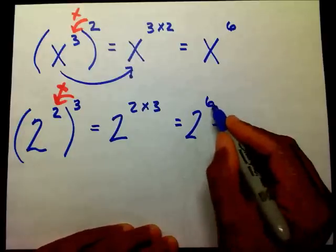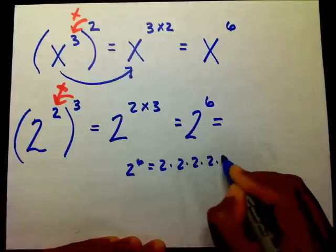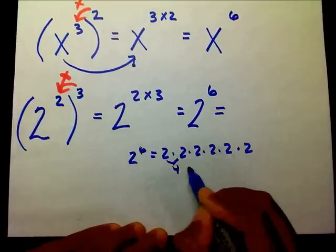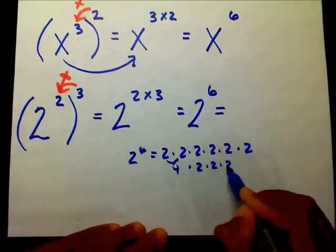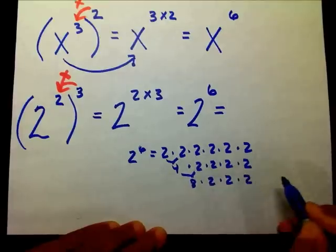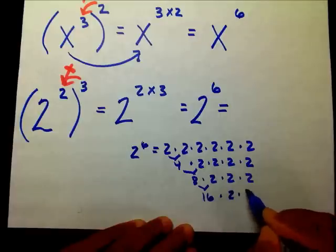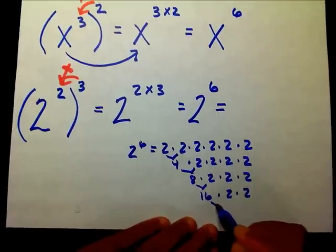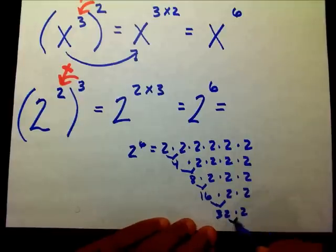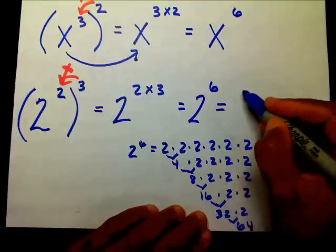Two to the sixth power — what does that mean? That means two times two times two times two times two times two. So I'm going to multiply two times two, that gives me four. Four times two is eight. Eight times two is 16. 16 times two is 32. And 32 times two is 64. Therefore, two to the sixth power is 64.